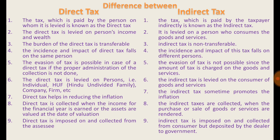The eighth difference relates to timing of collection. Direct tax is collected when the income for the financial year is earned or when assets are valued at the date of valuation. In indirect tax, it is collected when the transaction of purchase or sale is completed. For example, in income tax the person is liable to pay tax annually — except in certain circumstances like tax deduction at source — or in wealth tax when the value of wealth is counted on a particular date. But GST is payable by every consumer at every instance when he purchases or transfers something.